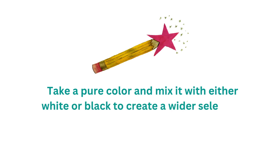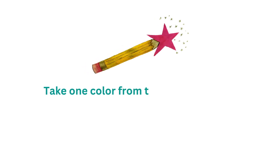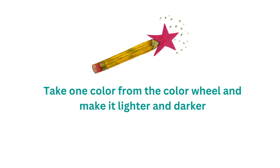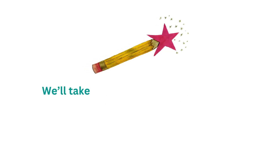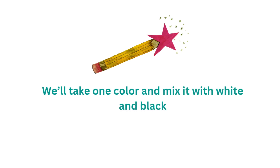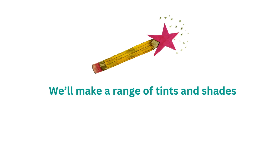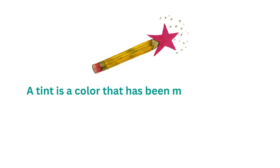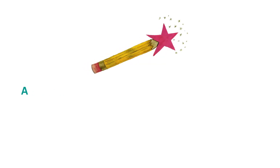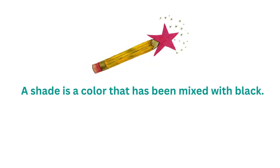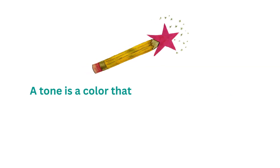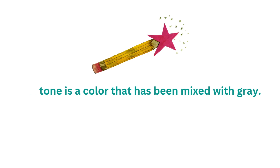This lets us make a wider selection of colour to use to make our paintings more interesting. So we're going to take one colour from the colour wheel and make it lighter and darker. Rather than mixing primary or secondary colours together as in previous lessons, in this lesson we're going to choose just one colour and mix it with white and also with black to create a range of tints and shades. A tint is a colour that has been mixed with white and lightened. A shade is a colour that has been mixed with black and darkened. A tone is a colour that's been mixed with grey — sometimes called being neutralised.